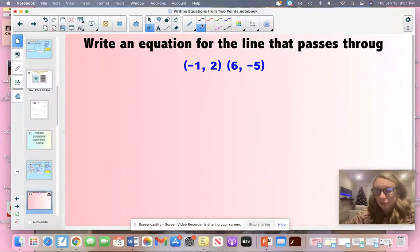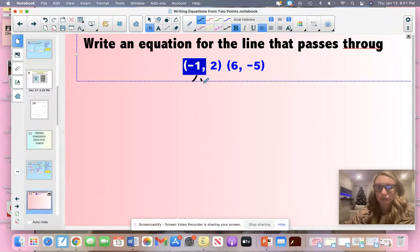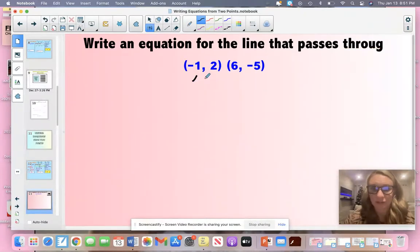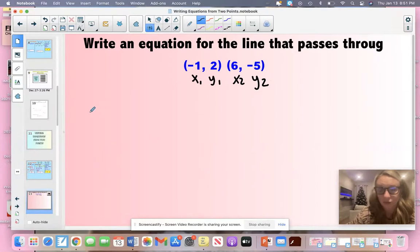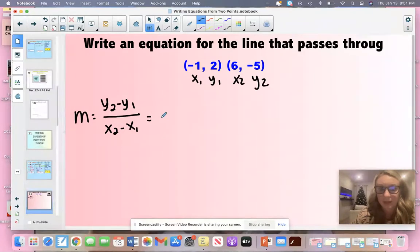So here we go. You are given two coordinate pairs, and I'm asking you to write an equation in slope-intercept form. The first thing that we're always going to do is we're going to solve for M using slope formula. Before you can do anything like that, please label your coordinate pairs. I promise you it'll make your life easy. So let's go ahead and solve for M. So here's what my formula looks like.